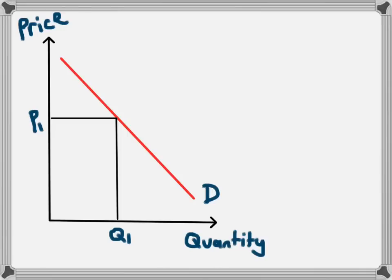The demand curve is downward sloping and this is because as the price of a product increases people will demand less. Sometimes this demand curve will actually move to the right or to the left and we're going to look at some reasons why that might happen.